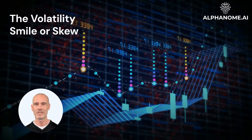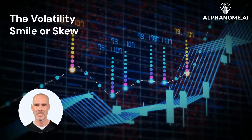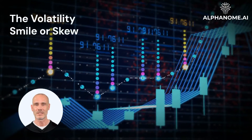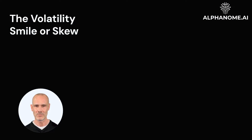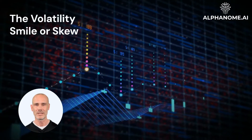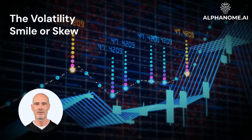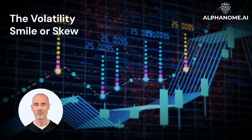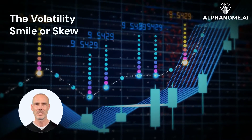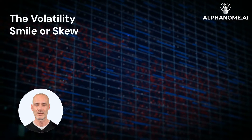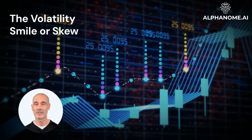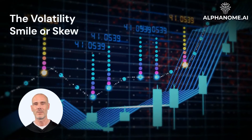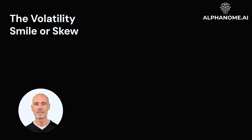For many underlying assets, the implied volatility surface exhibits a volatility smile or skew pattern. A volatility smile means that options with strike prices furthest away from the current underlying price — both calls and puts — have higher implied volatilities. For example, if XYZ stock is trading at $100, options with strikes of $80 and $120 may have higher implied volatilities than at-the-money $100 strikes. This smile pattern suggests the market expects a greater probability of extreme moves in the underlying price.